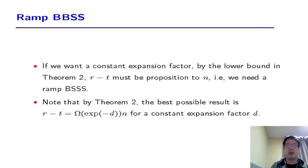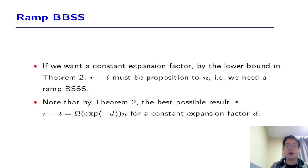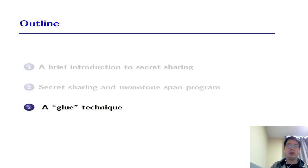If we want a constant expansion factor, then by the lower bound in Theorem 2, R minus T must be proportional to N. That means we need a ramp black box secret sharing. Note that by Theorem 2, the best possible result is R minus T equal to the exponential of minus D times N for constant expansion factor D. Finally, we use a glue technique to get an optimal ramp black box secret sharing scheme.